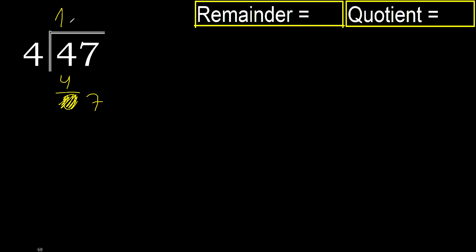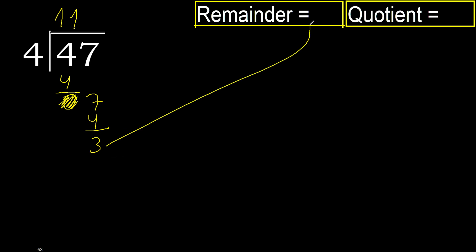8 is greater. 4 multiplied by 1 is 4, OK, is not greater. 7 minus 4 is 3. There is no next number, therefore finish. The result is 11 remainder 3.